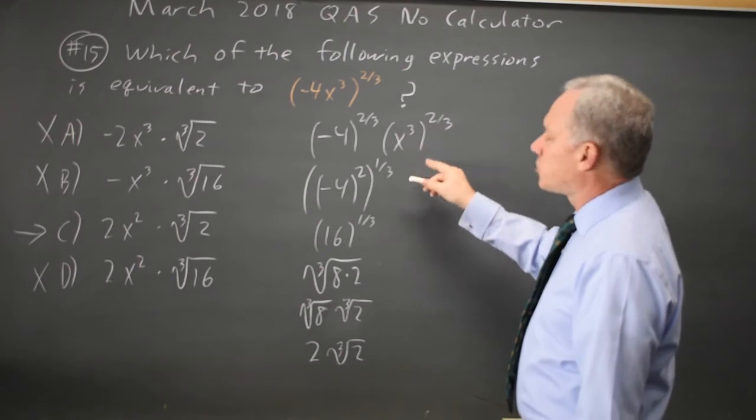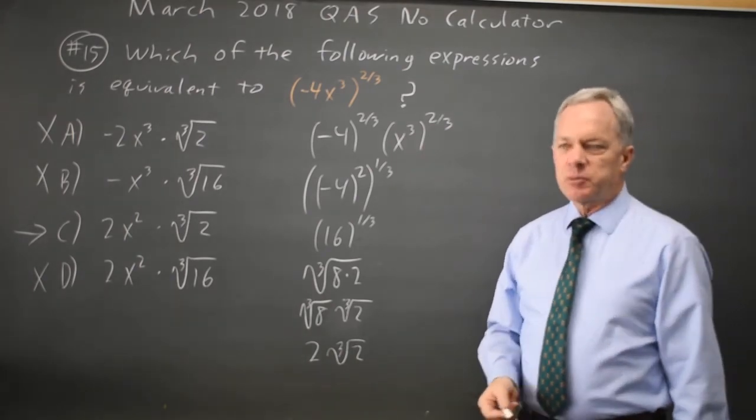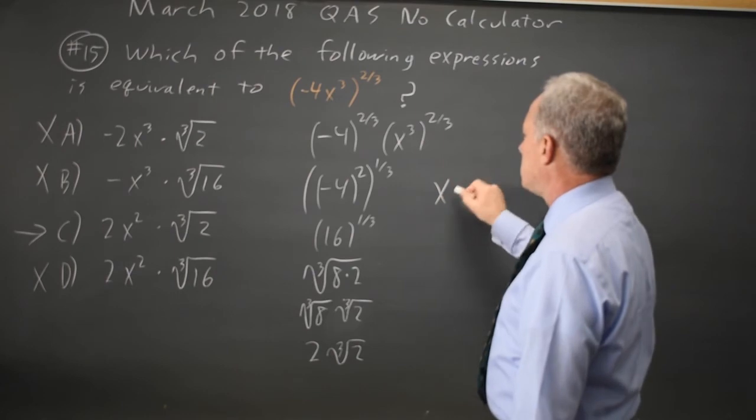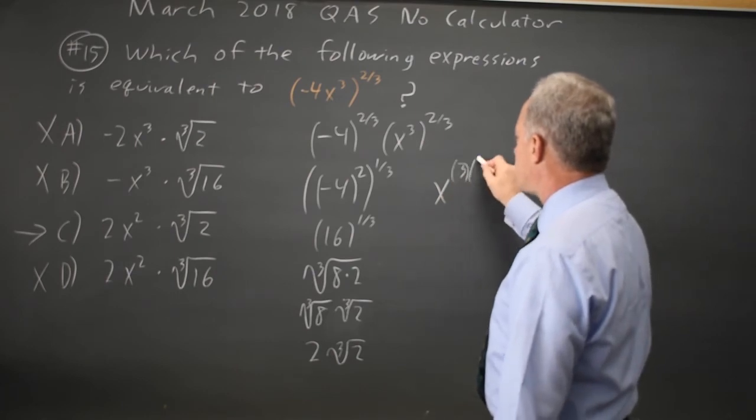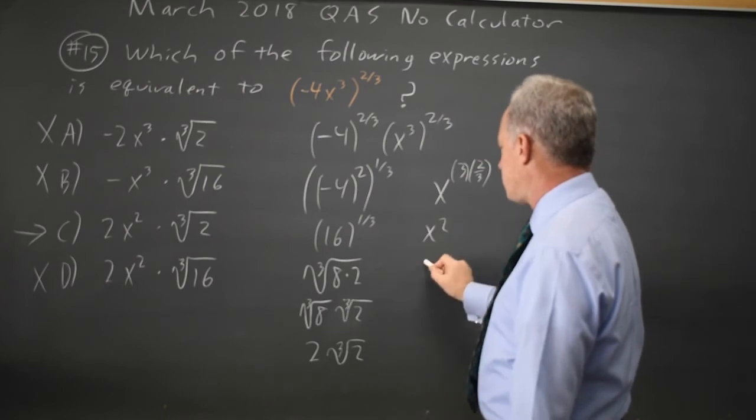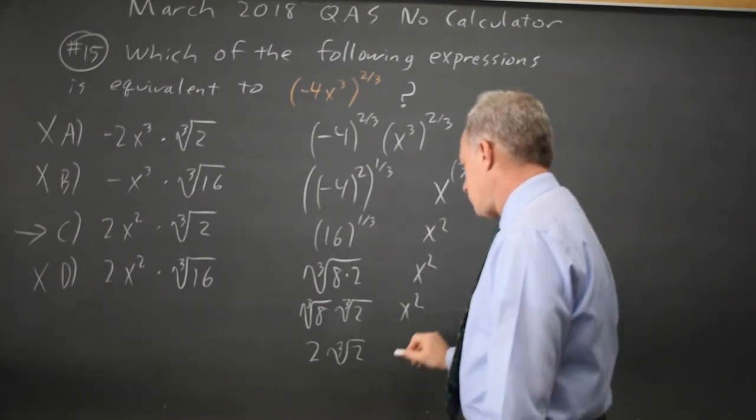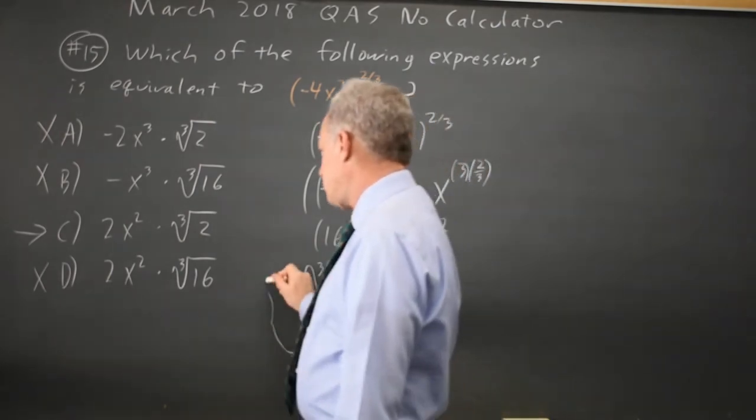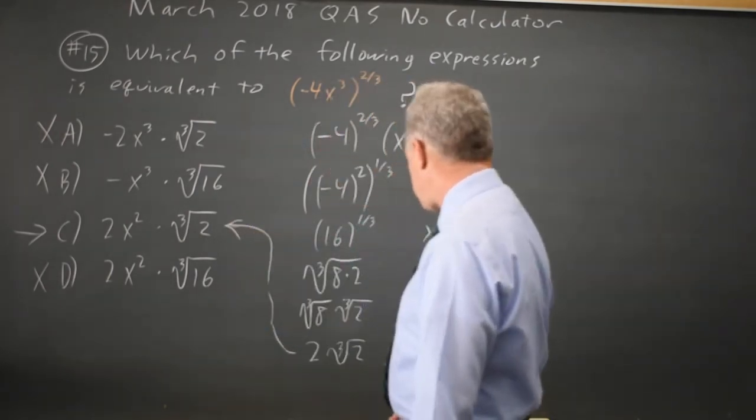X squared to the 2 thirds with a power of a power you multiply exponents so that would be x to the 3 times 2 thirds which is x squared. And that is an exact match for choice c.